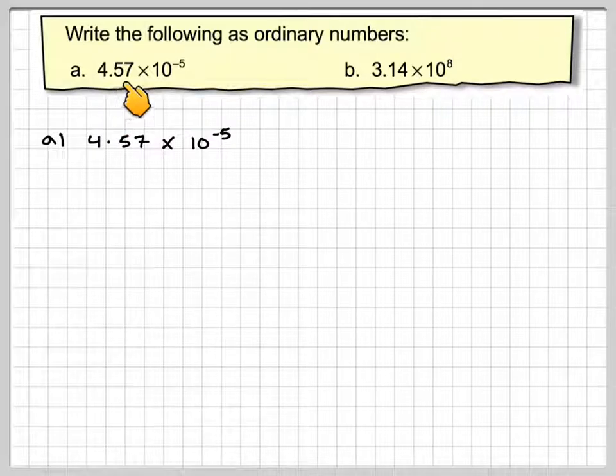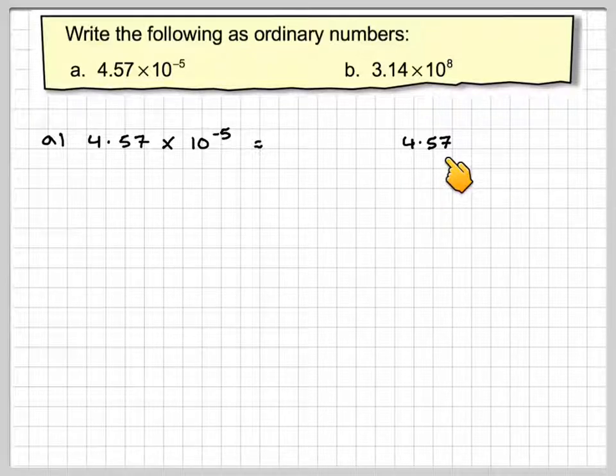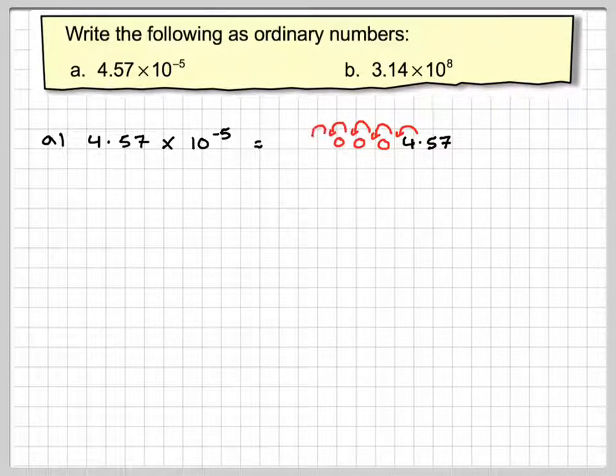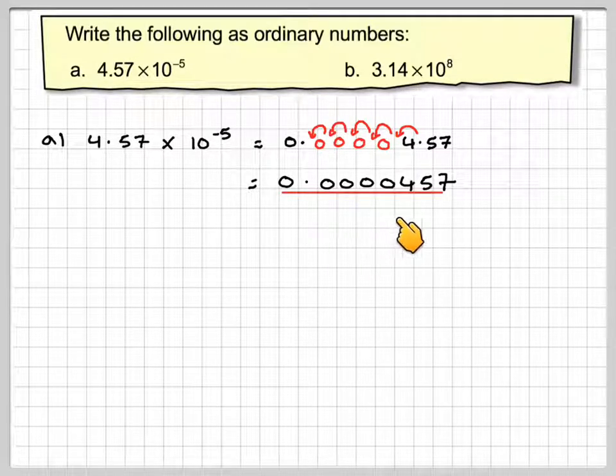So we've got 4.57 times 10 to the minus 5. I'm going to write down the 4.57. The minus 5 means I need to move the decimal point this way. So it's 1, 2, 3, 4, 5. I now need to put in a decimal point, and then obviously a 0 in front. So my answer will be 0.0000457.